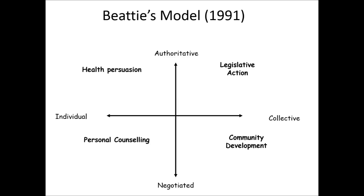The vertical axis talks about the kind of approach — whether it's going to be authoritative, what we might call top down, or whether it's going to be more negotiated with individuals or communities, what we might call more bottom up. When we put the horizontal and the vertical axis together, it creates four quadrants of activity. BT argues these four quadrants constitute health promotion: health persuasion, legislative action, personal counselling, and community development.